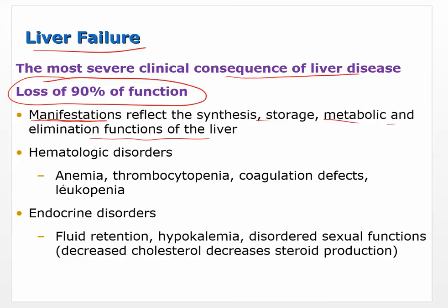Hematological disorders: anemia, thrombocytopenia — those clotting factors — coagulation defects. Anemia may be caused by hemorrhage that can't be stopped because of increased bleeding. Endocrine disorders: fluid retention, potassium disorders, sexual function disorders, because you're not going to be able to make steroid hormones. Cholesterol is made by the liver and shuttled out to various places, so without it you can't make steroid hormones, leading to sexual function disorders and other issues that rely on those steroid hormones.